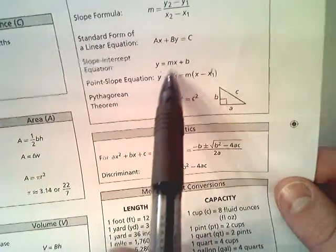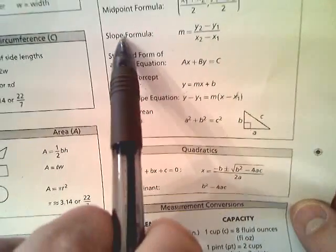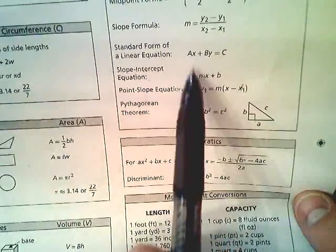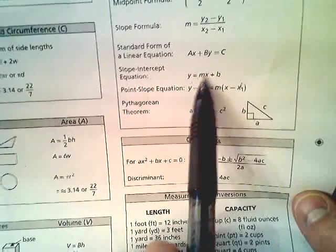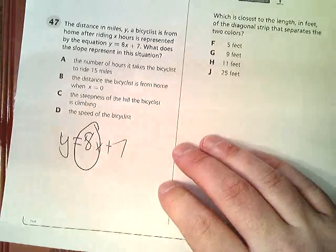Now, it says this is the slope-intercept form, so I'm guessing one of these, the m or the b, is the slope. If you look up just a little bit, this is the slope formula, and it lists m as the slope. So whatever is in front of the x is the slope. In this case, my slope is 8.